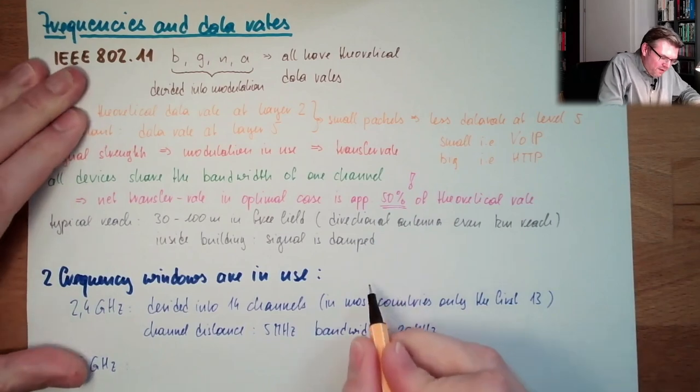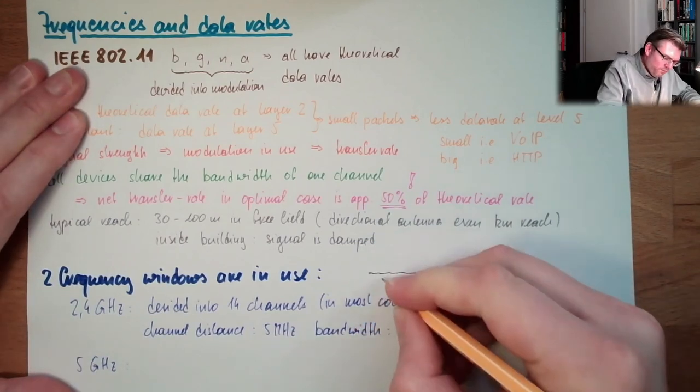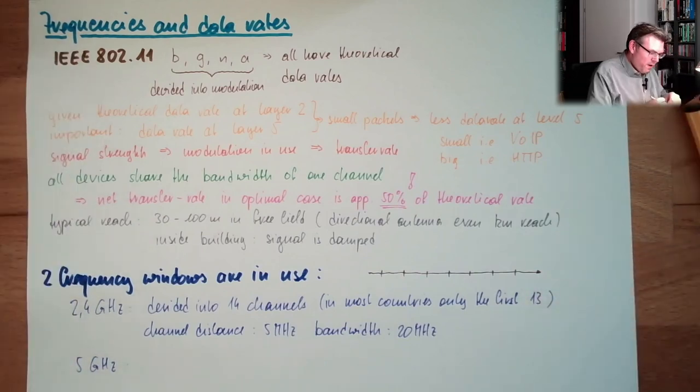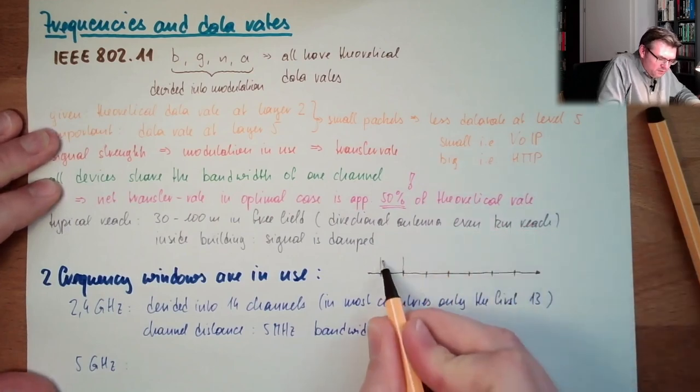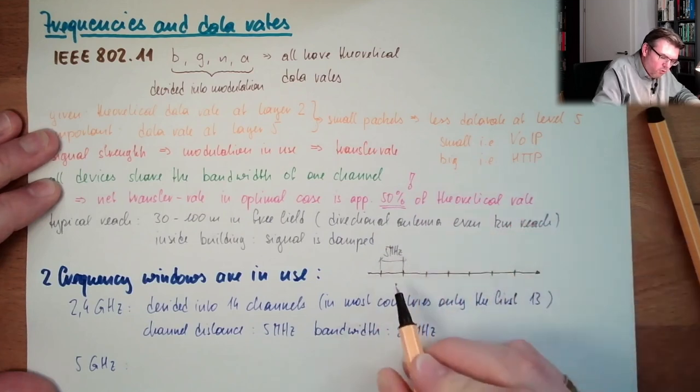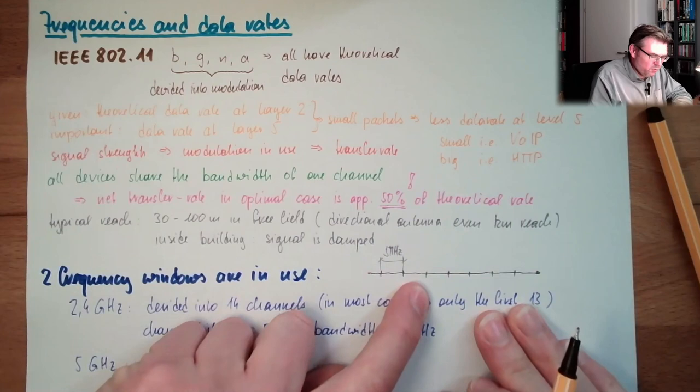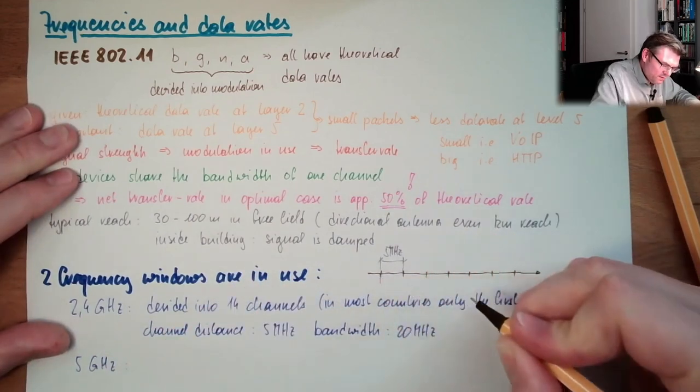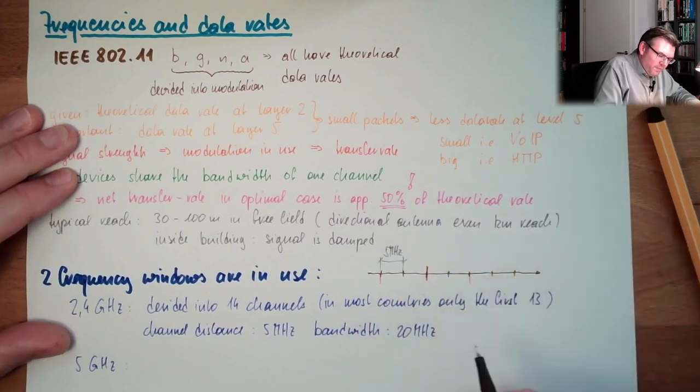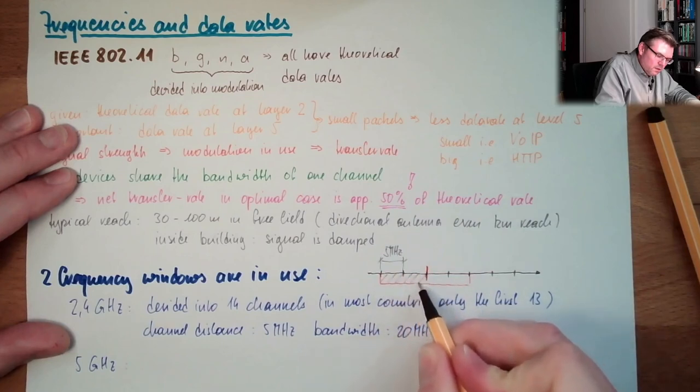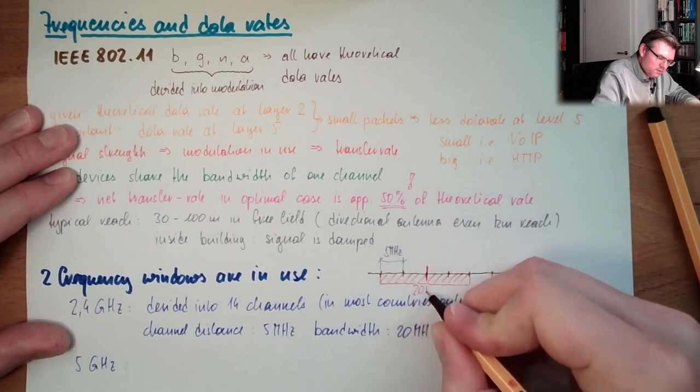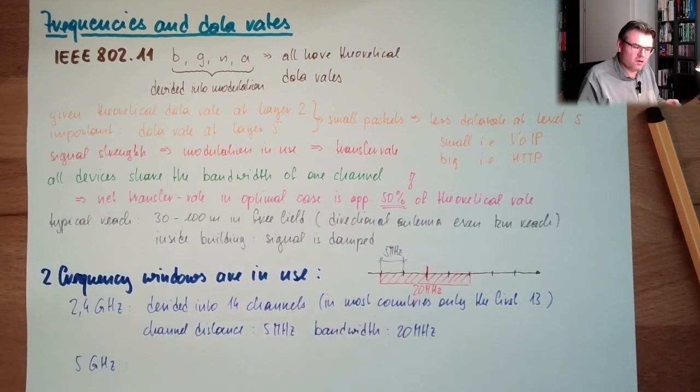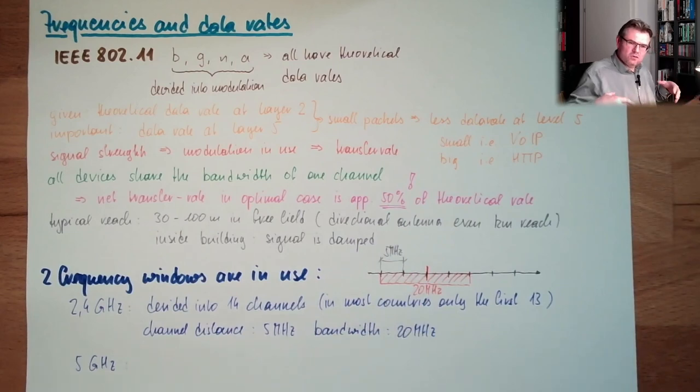Looking at this, so we have here channel 1, 2, 3, 4, 5, 6, 7, and so on. We have in between, always 5 megahertz. This is the channel distance. This is the channel, and let's say we're using this channel, then we have a bandwidth of 20 megahertz. This channel is in use 20 megahertz, and this is the bandwidth of the channel.